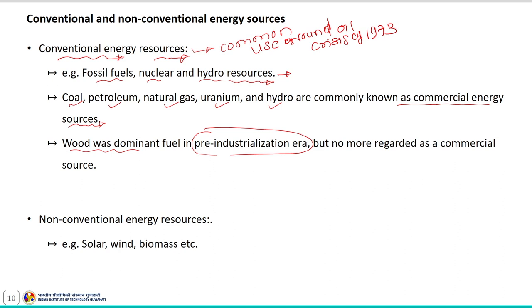Non-conventional energy resources are those considered for large-scale use that were not in use during the oil crisis. This gives us the information about conventional and non-conventional energy sources.